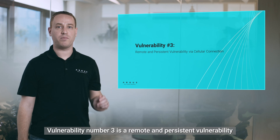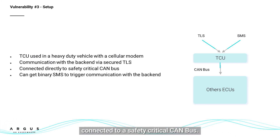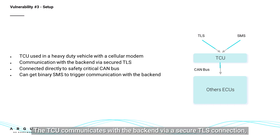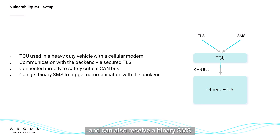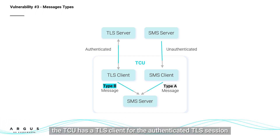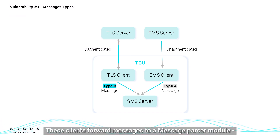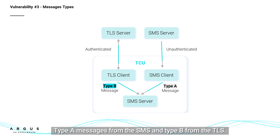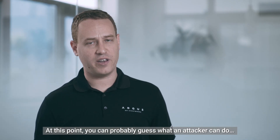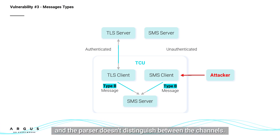Vulnerability number three is a remote and persistent vulnerability via cellular connection. In this setup, we had a TCU with a modem connected to a safety critical CAN bus. The TCU communicates with the backend via a secure TLS connection and can also receive a binary SMS to trigger communication with the backend. Zooming into the implementation, the TCU has a TLS client for the authenticated TLS session and an SMS client for the unauthenticated SMS messages. These clients forward messages to the message parcel module — type A messages from the SMS and type B from the TLS. At this point, you can probably guess what an attacker can do: an attacker can send type B messages via binary SMS and the parcel doesn't distinguish between the channels.